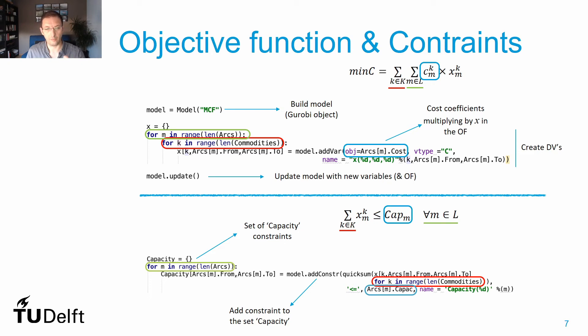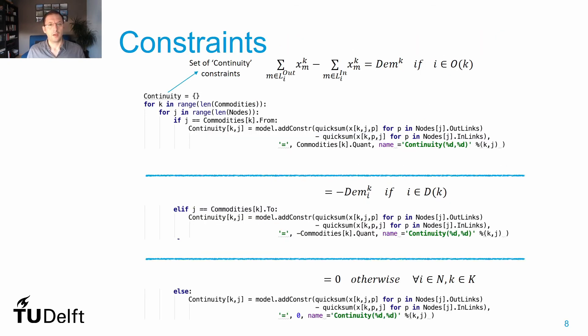And this way I formulate all my constraints regarding the capacity in the arcs. Moving now to the second set of constraints, I start again by building a dictionary in which I'll store the continuity constraints, and I know that I have to repeat these constraints as many times as the number of commodities.